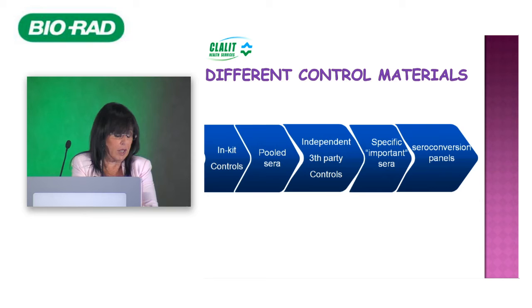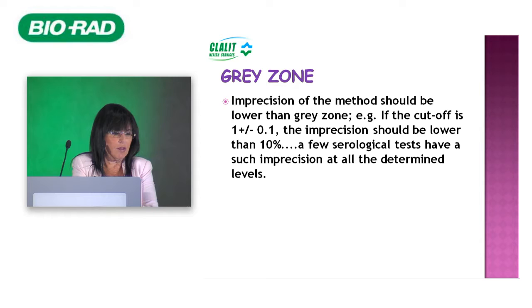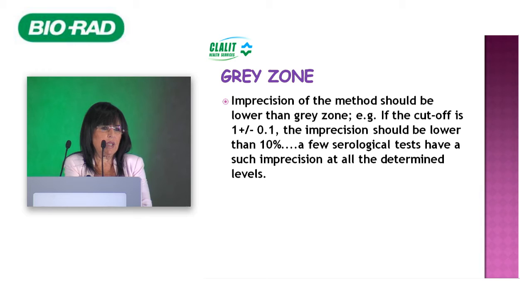Regarding the gray zone: imprecision should be lower than the gray zone width. For example, if the cutoff is 1 ± 0.1, imprecision should be below 10%. However, very few serological assays achieve this. We prefer assays with imprecision under 10%, but for some topics you must allow 20% imprecision because there is no other choice. The CV can help define the gray zone, and expanding it may be preferable to misclassifying a patient.